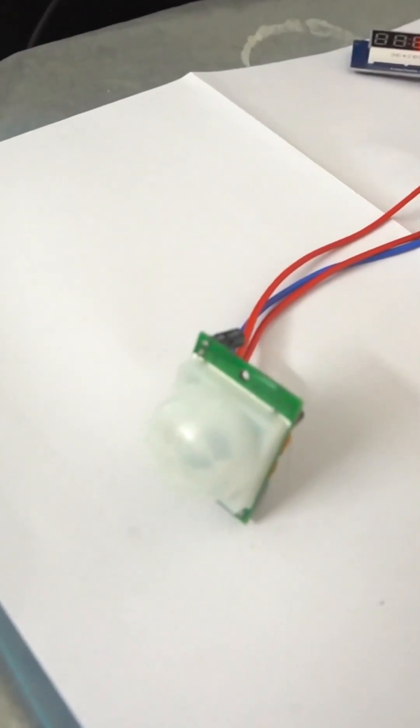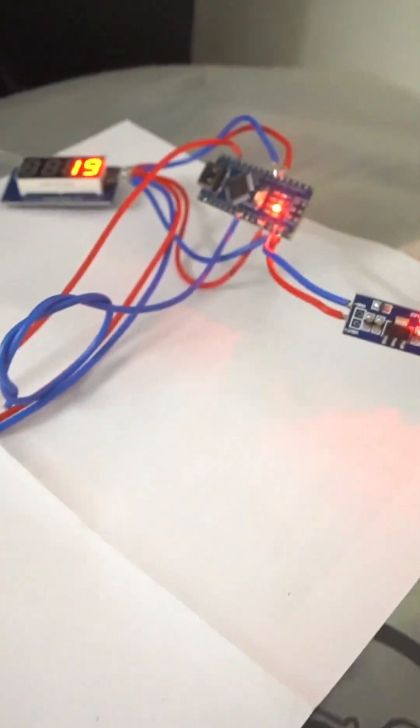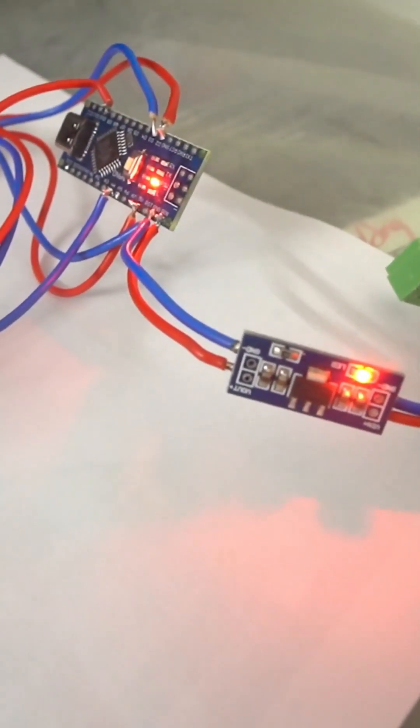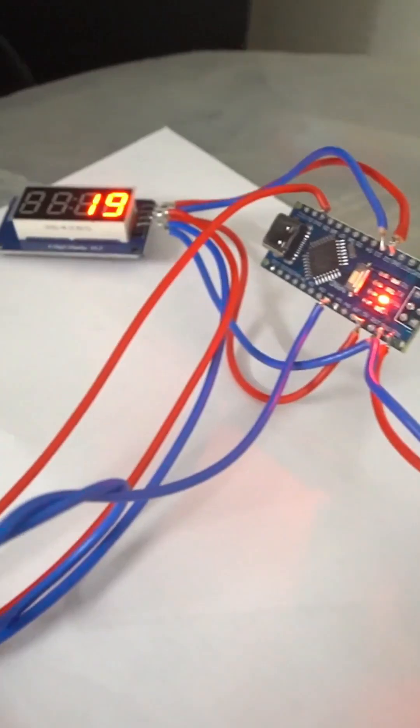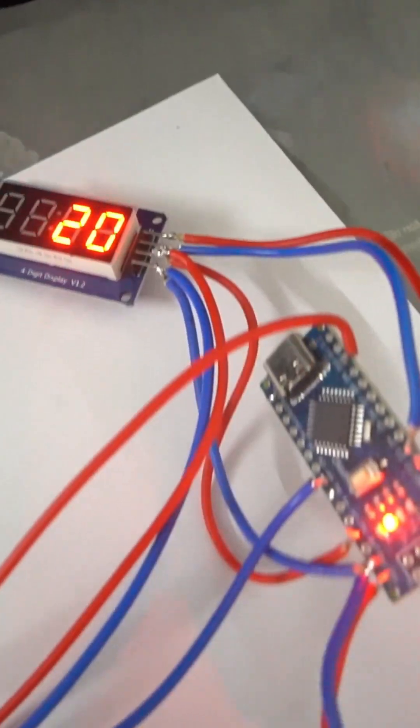Hello friends, now we are watching a video of counting motion using a PIR motion sensor. This is a voltage regulator, this is an Arduino Nano, and this is a 4-digit 7-segment display, its name is TM1637.